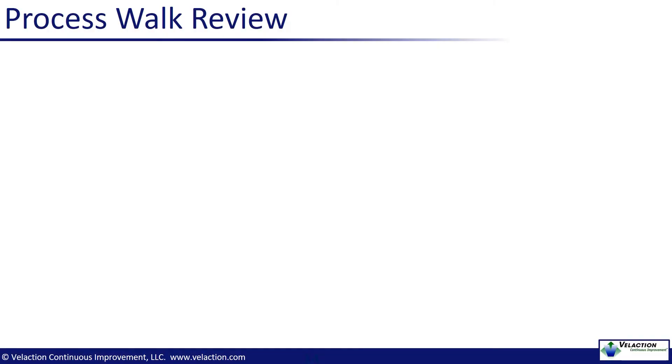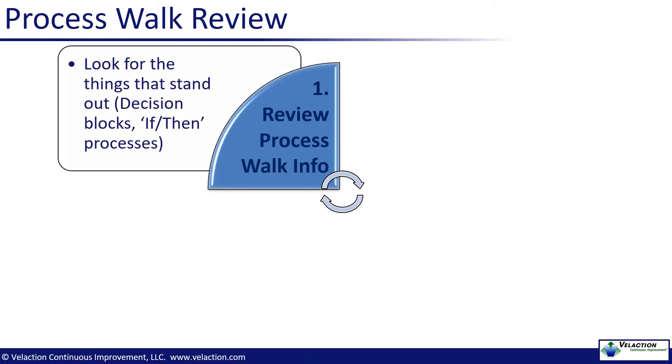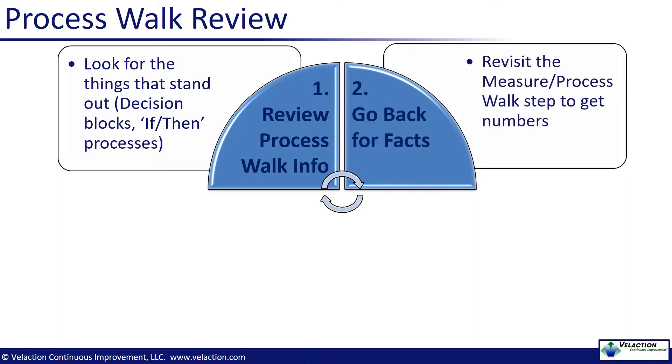The steps in the last slide were the generalized process to review data. Let's focus now on how to apply those steps to your process walk. Again, dive into your data to get things going. Pay special attention to anything that stands out as an opportunity to improve a process. Any decision point on a flowchart is a good place to start. Find the data that accompanies it and see what it tells you. As you dive into the data, you'll nearly always uncover something that you need to know more about. Don't hesitate to go back to the process walk step to gather that data. The better the information you start with, the better your new process will be.